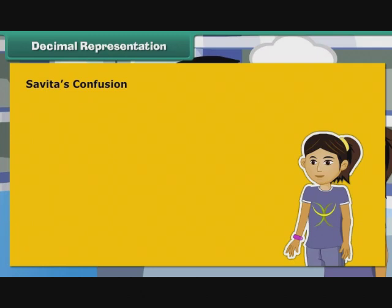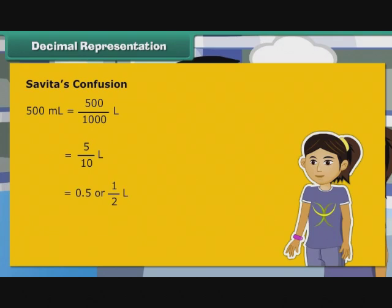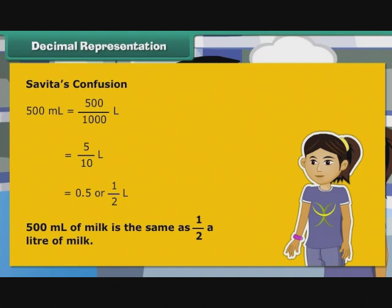Now we revisit Savita's confusion. 500 ml is equal to 500 by 1000 litre, that is equal to 5 by 10 litre, that is equal to 0.5 or 1 by 2 litre. So 500 ml of milk is the same as half a litre of milk. Savita is now relieved.